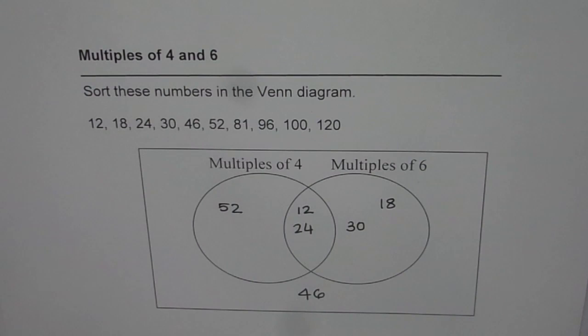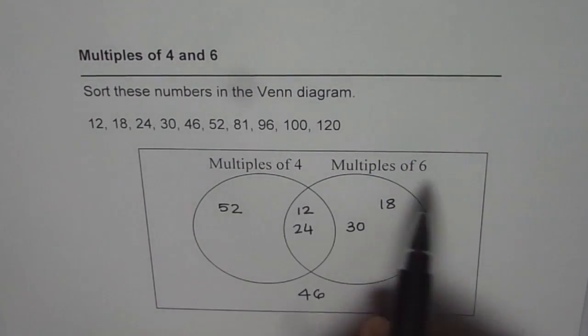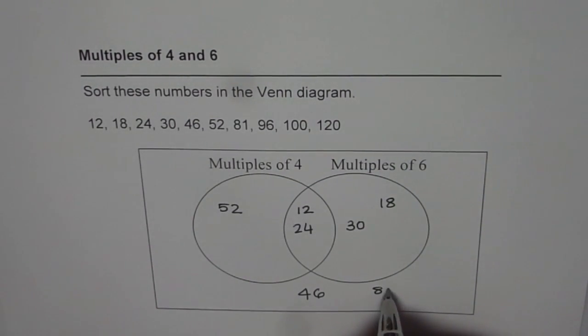81: Now, 81 is an odd number. So therefore, it is not a multiple of 4 or 6. So 81 will come outside.